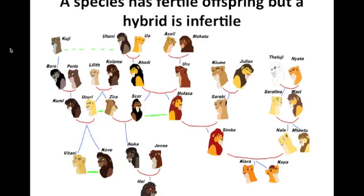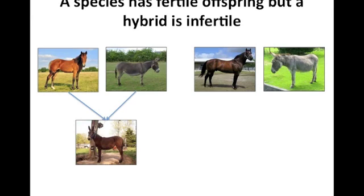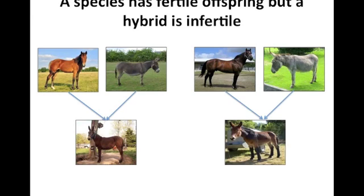This family tree clearly shows that lions are of the same species because they can have offspring, which can also have offspring, and so on — there is fertility throughout the generations. Hybrids, however, are infertile. For example, if a horse and a donkey have a mule, and another horse and donkey have another mule, those two mules are unable to breed successfully.